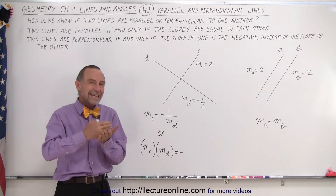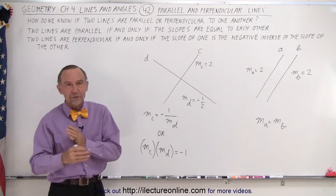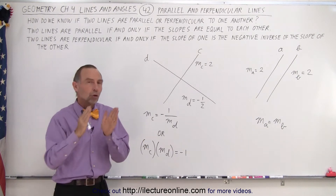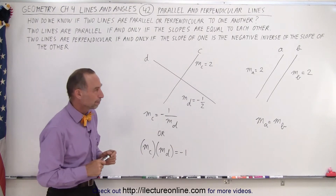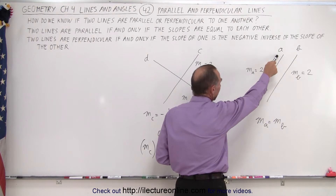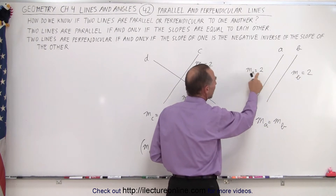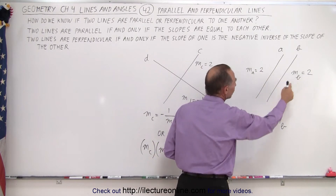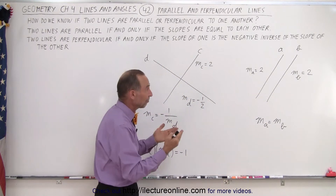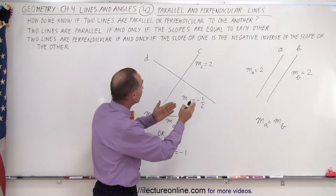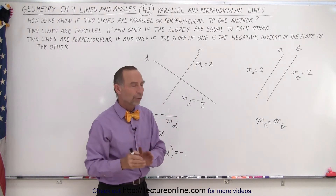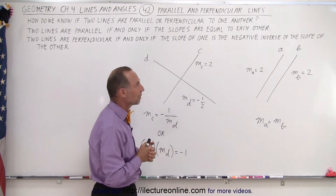When we say 'if and only if,' there is no other way in which two lines can be parallel unless the two slopes are equal to one another. Here we have examples: line A and line B. The slope of A is 2 and the slope of B is 2. The two slopes are equal to each other, and therefore by definition, if and only if the slopes are equal, the two lines must be parallel.